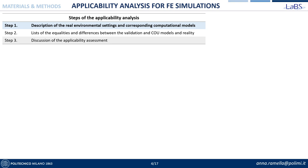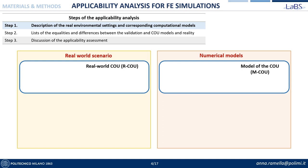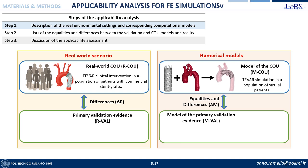These are the three main steps of the applicability assessment. The first one consists of describing the key players of the analysis. On one side, there is the real-world scenario and on the other, the numerical models. Among them, we define the context of use in both the real and the model, and the primary validation evidence which supports the use of the numerical model, together with their qualities and differences.